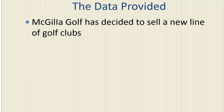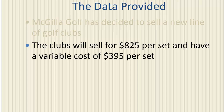Here is the data provided to us. Megila Golf has decided to sell a new line of golf clubs. These clubs will sell for $825 per set and will have a variable cost of $395 per set. Variable costs are the costs related to per unit, so as production goes up, the total variable cost goes up. Examples include labor and materials used to build the item.